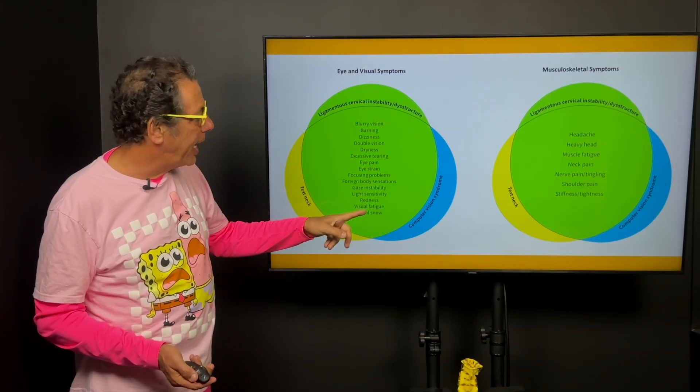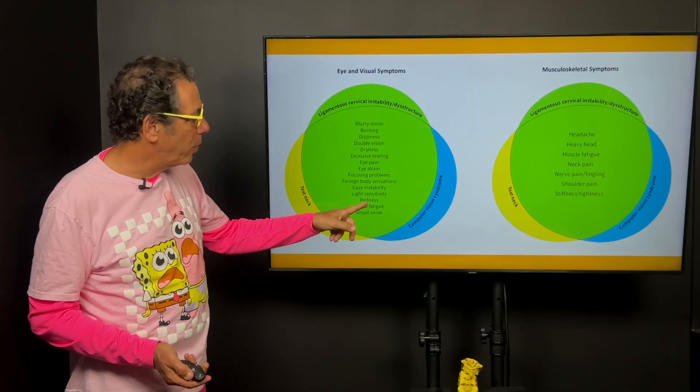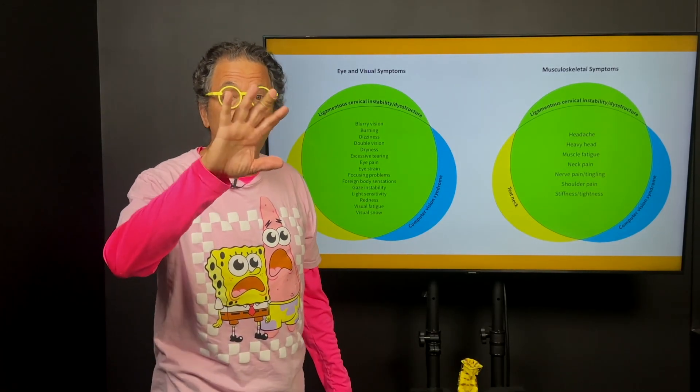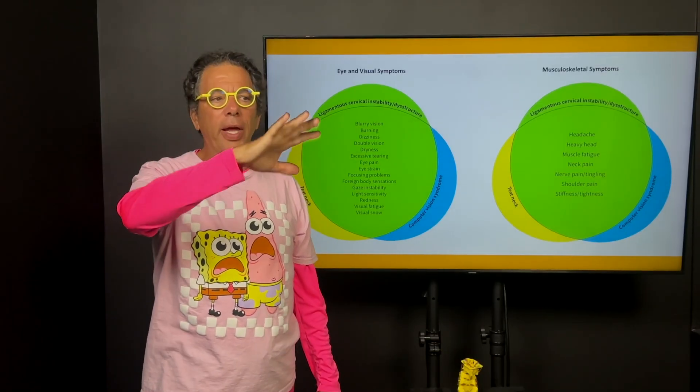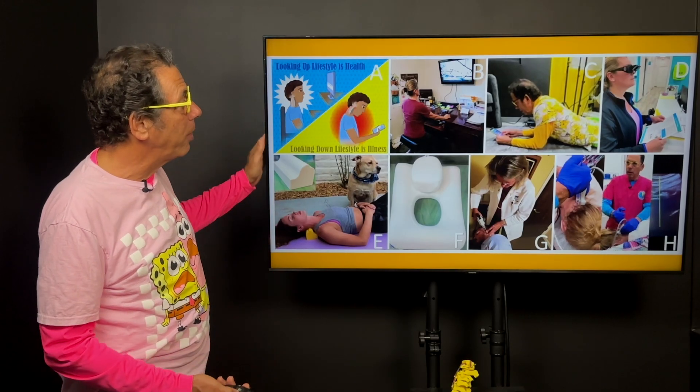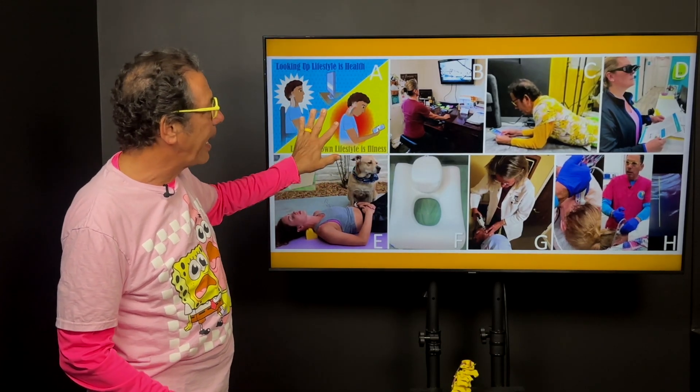So eye and visual symptoms are common when you have ligamentous cervical instability or destructure: excessive tearing, eye pain, focusing problems, redness, visual snow right that's a big one where a person looks and it's almost like you're in a snowstorm or there's excessive glare. Consider that it might be actually a musculoskeletal problem and not a primary eye problem.